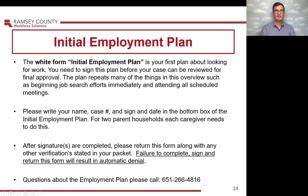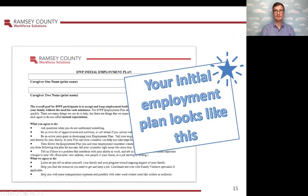Initial Employment Plan. The white form initial employment plan is your first plan about looking for work. You need to sign this plan before your case can be reviewed for final approval. The plan repeats many of the things in this overview, such as beginning job search efforts immediately and attending all scheduled meetings. Please write your name, case number, and sign and date in the bottom box of the initial employment plan. For two-parent households, each caregiver needs to do this. After signatures are completed, please return this form along with any other verifications stated in your packet. Failure to complete, sign, and return this form will result in automatic denial. Questions about the employment plan, please call 651-266-4816. Your initial employment plan looks like this.